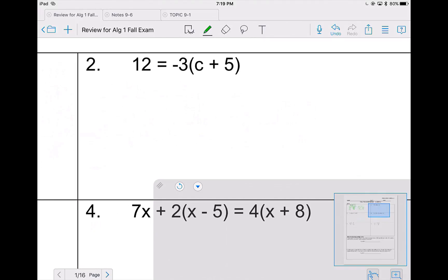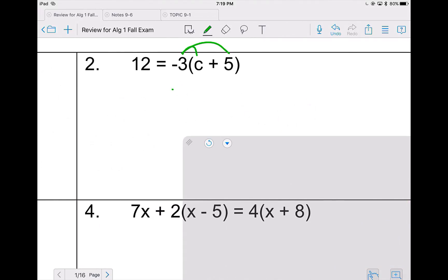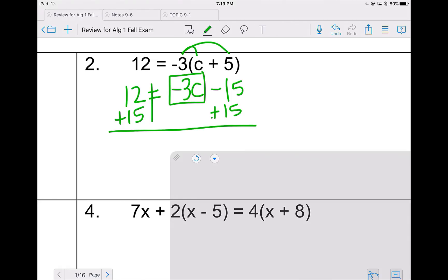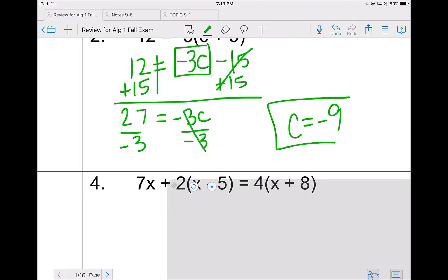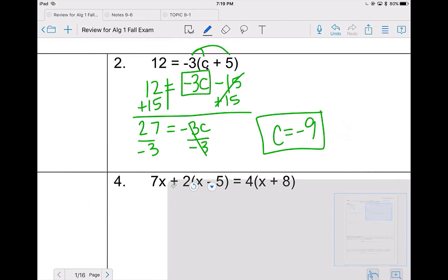On problem 2, I need to get rid of the parentheses first. So negative 3 times c and negative 3 times 5. From here, I'm trying to get c by itself. So I will move the 15 by doing the opposite operation. In this case, the opposite of a negative is adding. I bring the box down exactly like I see it, and 12 plus 15 is 27. And then divide by negative 3, so c equals negative 9. Again, to check, I can plug negative 3 times negative 9 plus 5 into the calculator and make sure that I get 12.